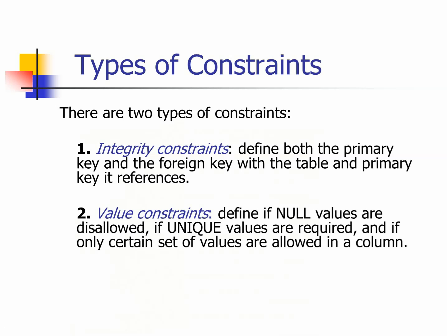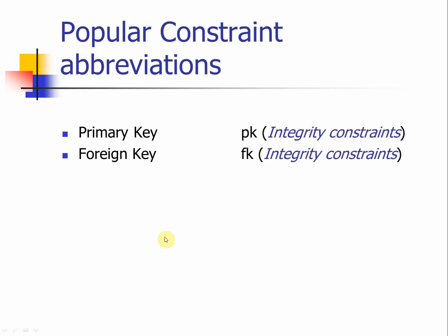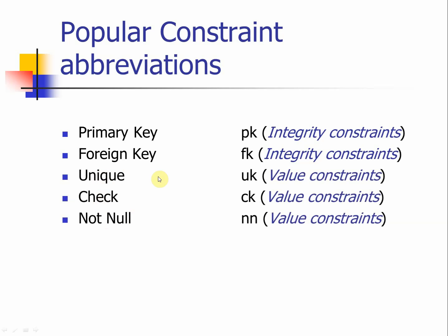Now let us take a look at constraints. There are two types: integrity constraints, which define the primary key and foreign key, and value constraints, which indicate whether null is allowed, whether unique must be satisfied, or whether not null is enforced. In Oracle, we use the abbreviations PK and FK for primary key and foreign key. In Oracle DDL code, PRIMARY KEY and FOREIGN KEY are reserved words for creating constraints, as are UNIQUE, CHECK, and NOT NULL.